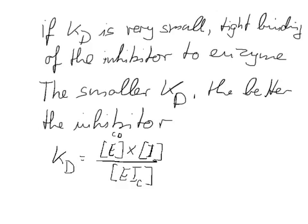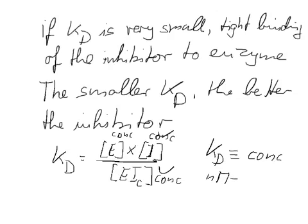So we know that this is a concentration, we know this is a concentration, we know this is a concentration. And we can cancel out one concentration. So the unit for Kd in this case is equivalent to concentration. Usually a good inhibitor would work at the nanomolar to micromolar range. That is usually a good inhibitor.